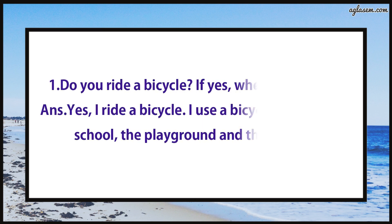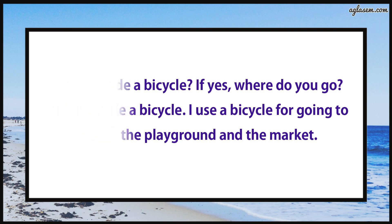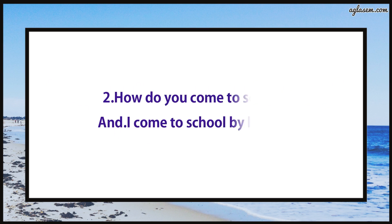For the next section, question number one says: Do you ride a bicycle? If yes, where do you go? Answer: Yes, I ride a bicycle. I use a bicycle for going to school, the playground, and the market. Question number two says: How do you come to school? Answer: I come to school by bicycle.